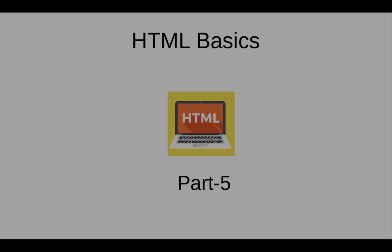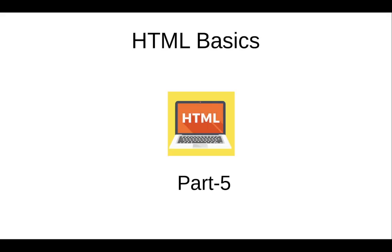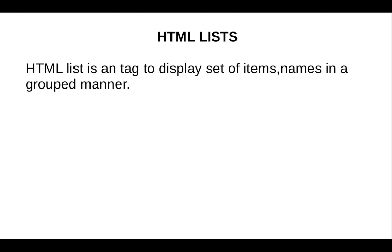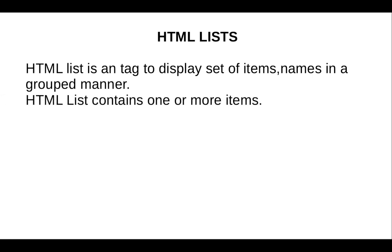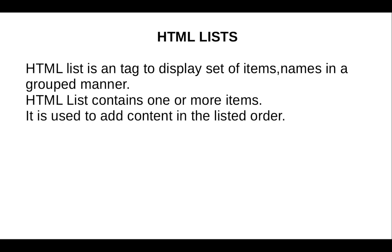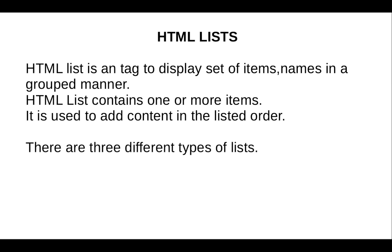Hello everyone, welcome to my YouTube channel UI Ninjas. In this video we will discuss HTML lists. An HTML list is a tag used to display a set of item names in a group manner. HTML list contains one or more items and is used to add content in a listed order.